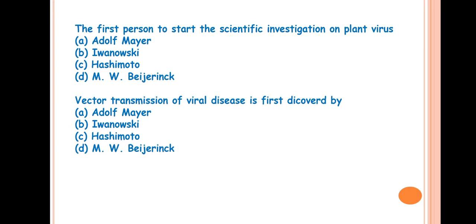The next question is, the first person to start scientific investigation on plant viruses? The answer is A, Adolf Mayer. He was the first scientist who studied on virus, that is tobacco mosaic virus. This mosaic term was given by Adolf Mayer. The next question is, vector transmission of viral disease is first discovered by? The answer is C, Hashimoto. He first discovered vector transmission. Adolf Mayer first started the study of viral diseases, the tobacco mosaic virus.